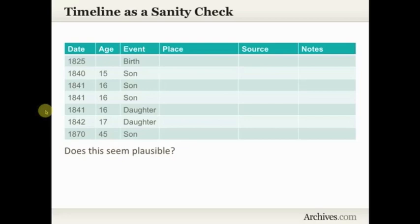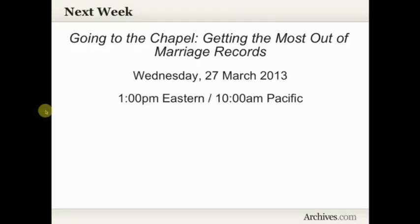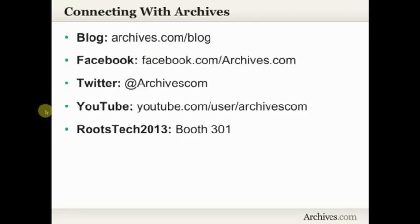Timelines are great for generating ideas of other places and records to search, as we did with George Cassidy, and for serving as a sanity check. Next week here on the archives.com live stream, we're going to the chapel — getting the most out of marriage records — on March 27th at 1pm Eastern and 10am Pacific. Stay connected with archives.com on the blog, Facebook, and Twitter. Previous live streams are on our YouTube channel. If you're going to RootsTech, stop by booth 301. Until next time, this is Amy Johnson Crow — happy researching!